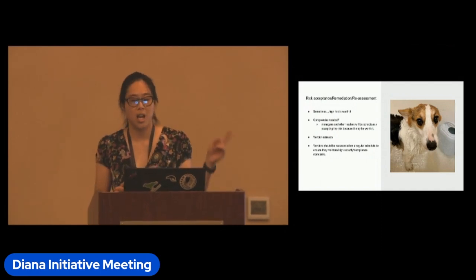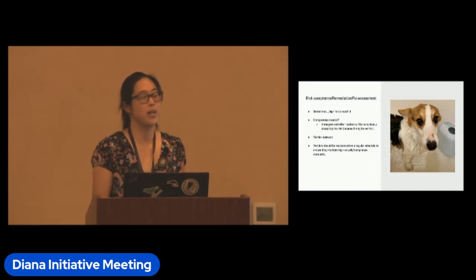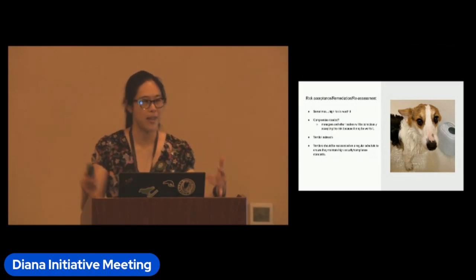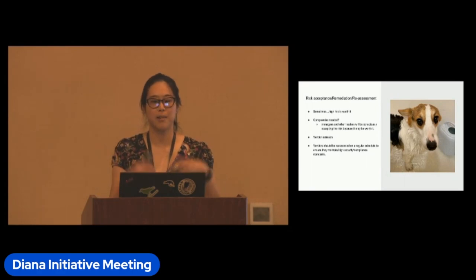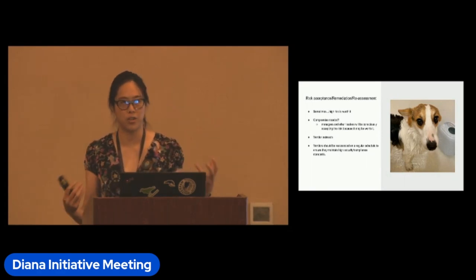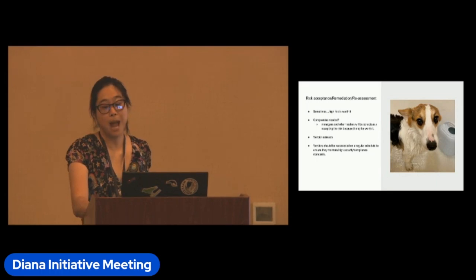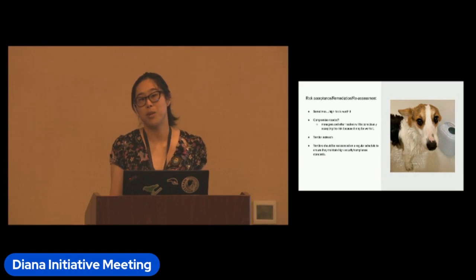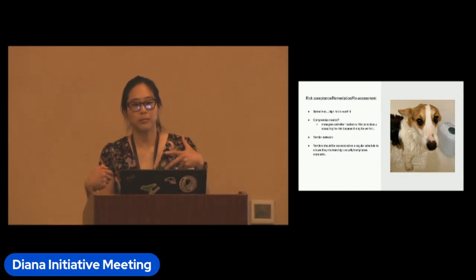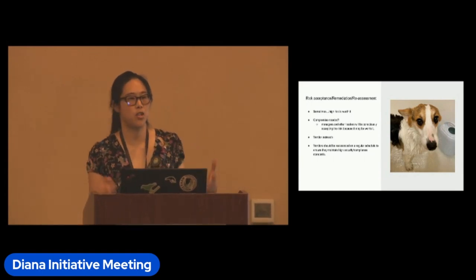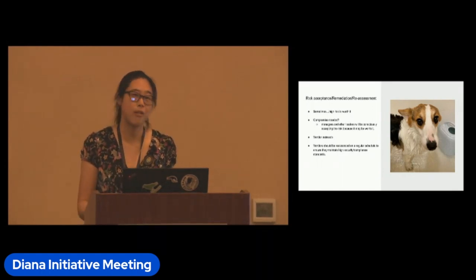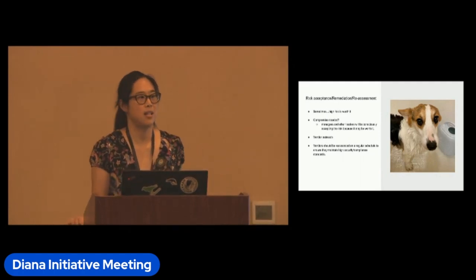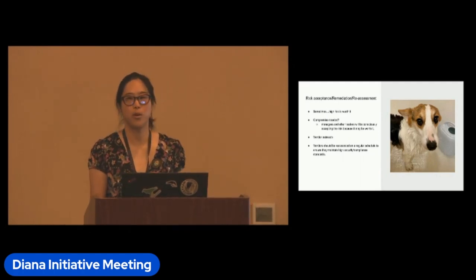A good way to track when to reassess vendors is to put them on a schedule based on data classification. Apps classified as public or confidential may only need to be reassessed every three years, but highly confidential or restricted apps may need to be reassessed every single year. Then you go back to the vendor and say: can you send me updated security and compliance reports for the most current year?